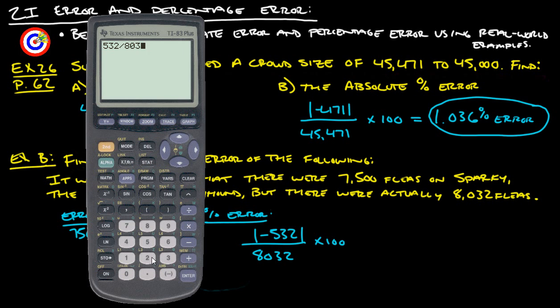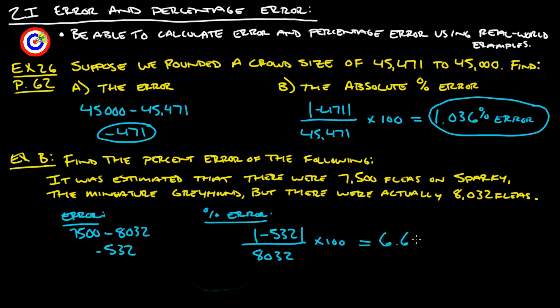532 divided by 8032, multiplied by 100, and the percent error is about 6.6%.